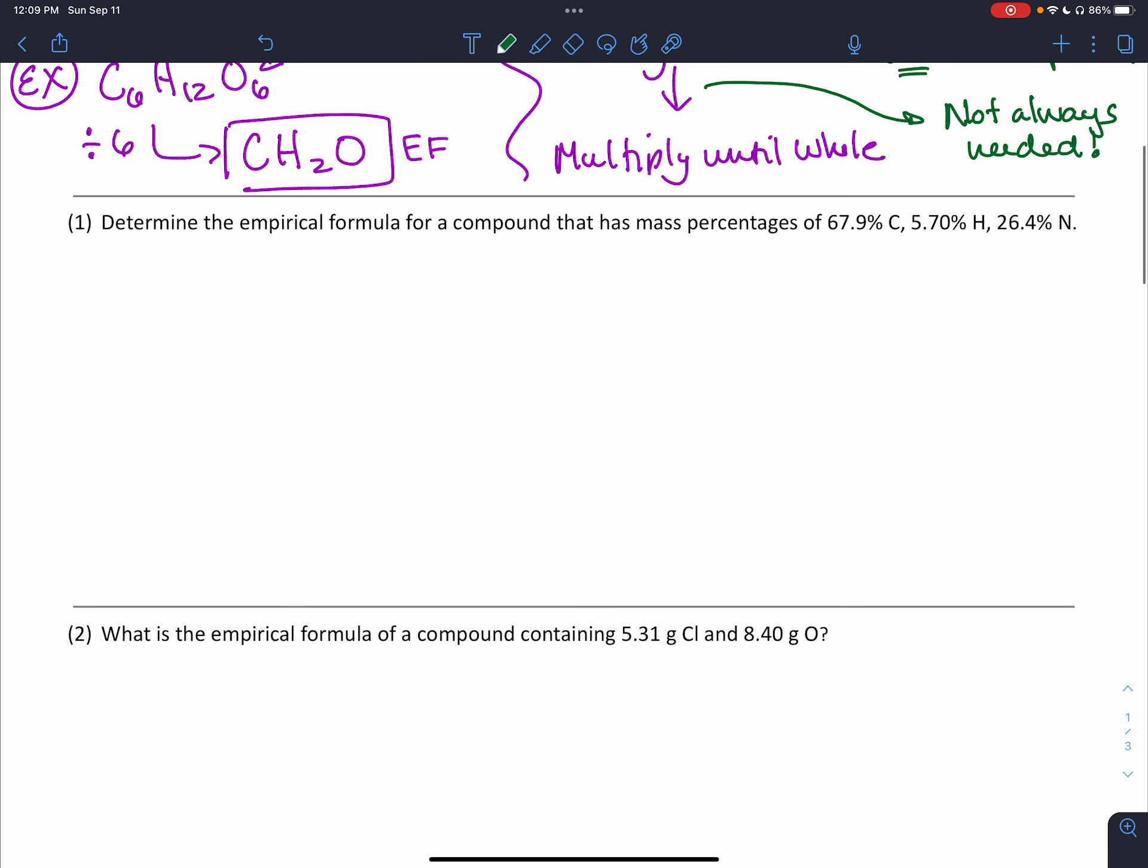Let's look at this first problem. Determine the empirical formula for a compound that has mass percentages of 67.9% carbon, 5.7% hydrogen, and 26.4% nitrogen. We start by assuming that we have 100 grams of our compound. That means I have 67.9 grams of carbon, 5.70 grams of hydrogen, and 26.4 grams of nitrogen. There's our percent to mass step.